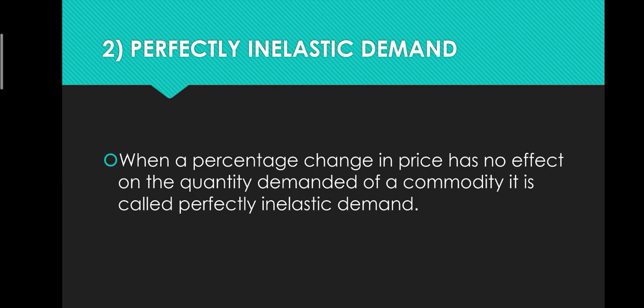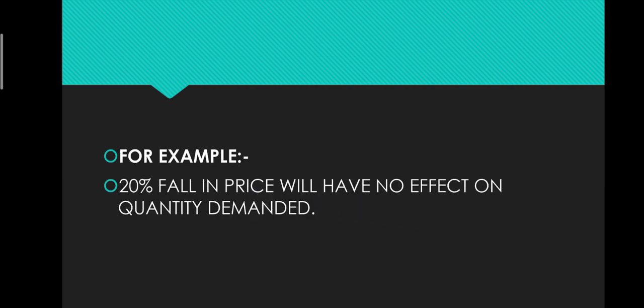The second type is perfectly inelastic demand. When a percentage change in price has no effect on the quantity demanded of that commodity — please pay attention to the words 'no effect on quantity demanded' — that means whether you increase or decrease the price, demand remains unchanged. So it is called perfectly inelastic demand. For example, a 20% fall in price will have no effect on quantity demanded, and a 30% rise in price will also have no effect on quantity demanded.